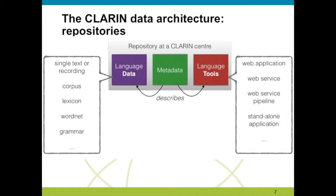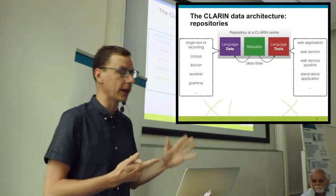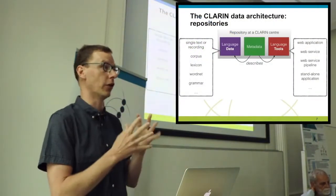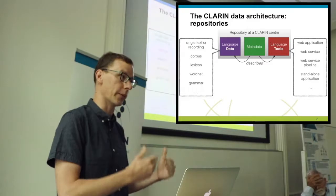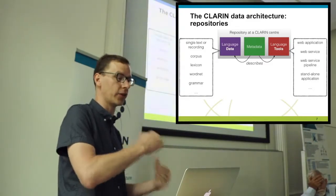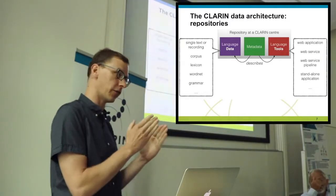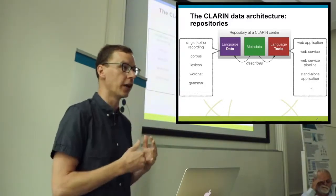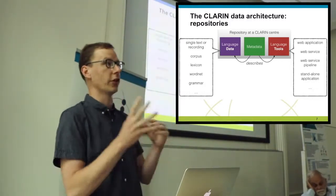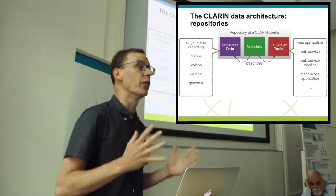At the core of such a CLARIN center is a repository containing metadata descriptions about either the language data or the language tools available at that center. Language data can be quite wide — single texts, recordings, large corpora, newspaper corpora, digitized medieval charters, lexica, word nets, grammars, and so on. These resources are tied to the specialization of the center, with some centers specialized in speech and others in medieval text.